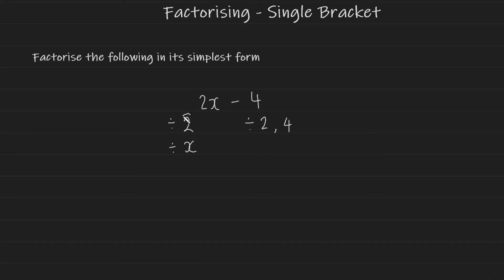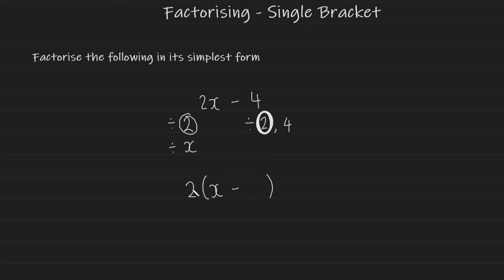Take the highest common factor for numbers and the highest common factor for variables. Since we don't have a common variable factor, the highest common factor for numbers is 2, so I write 2 outside the bracket. Then dividing back: 2 divided by 2 is 1, and in algebra there's no need to write 1x — just write x. Then 4 divided by 2 is 2. So the result is 2(x − 2). Expanding confirms: 2 times x is 2x, 2 times 2 is 4, back to the original expression.